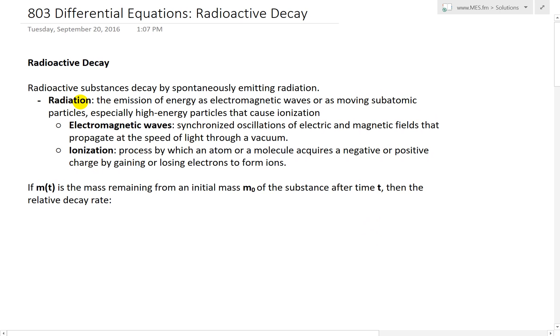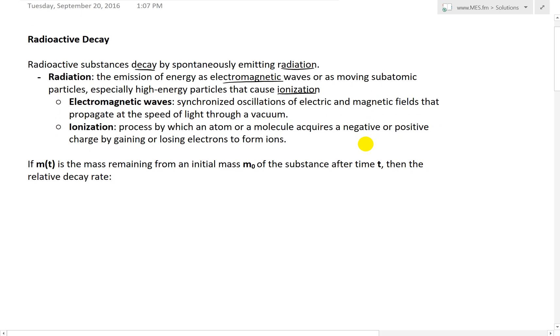So radioactive decay is when radioactive substances decay by spontaneously emitting radiation. Radiation is the emission of energy as electromagnetic waves or as moving subatomic particles, especially high-energy particles that cause ionization. Electromagnetic waves are synchronized oscillations of electric and magnetic fields that propagate at the speed of light through a vacuum.